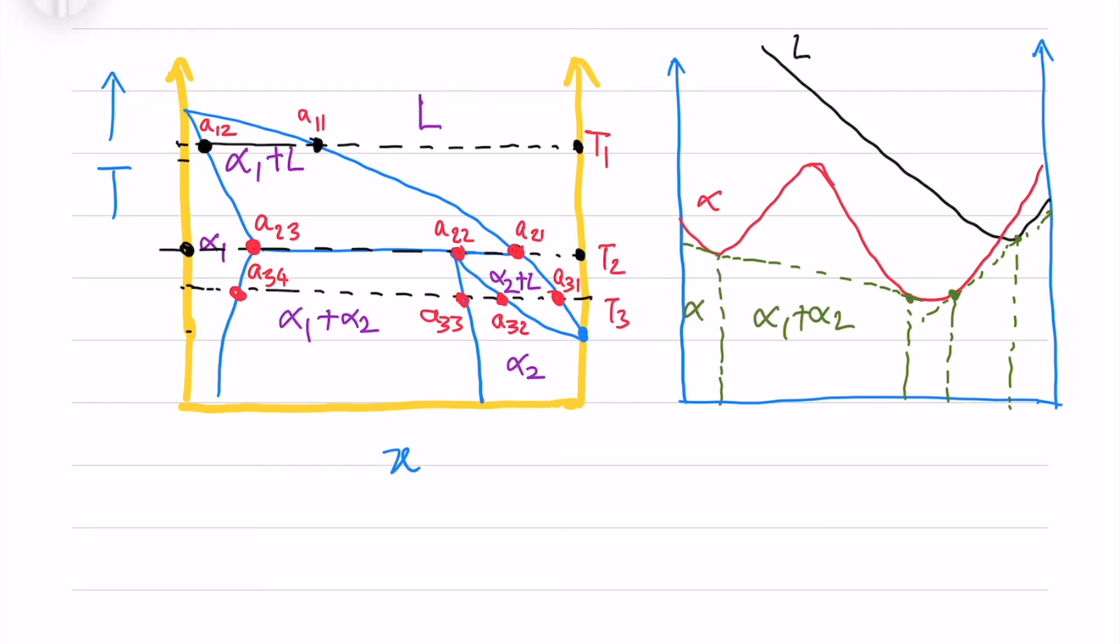So you'll have these two liquid equilibrium points: alpha 1 plus alpha 2, and alpha 2 plus liquid. I mark the compositions as well.